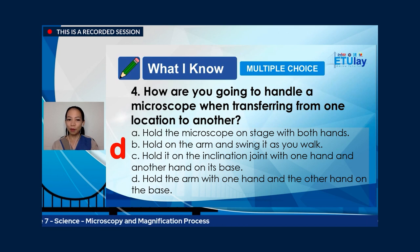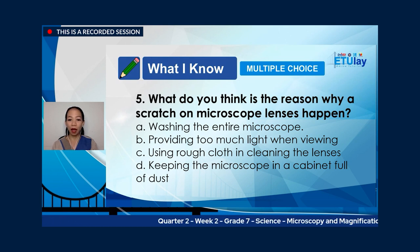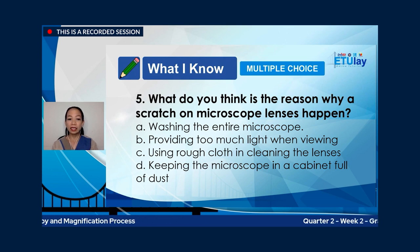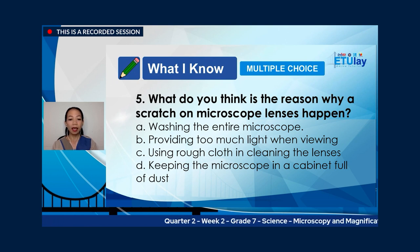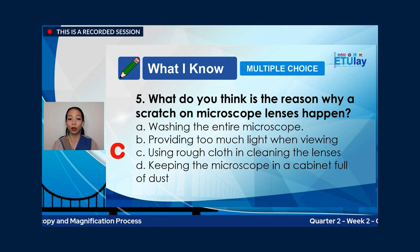Last item for our pre-test. Number five: what is the reason why a scratch on microscope lenses happens? A, washing the entire microscope; B, providing too much light when viewing; C, using rough cloth in cleaning the lenses; or D, keeping the microscope in a cabinet full of dust? The correct answer is letter C, using rough cloth in cleaning the lenses.